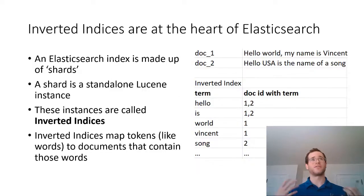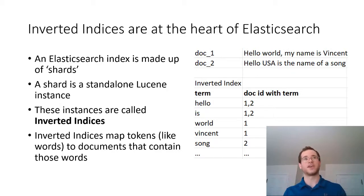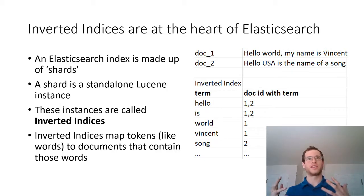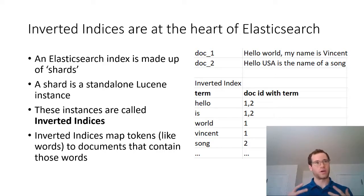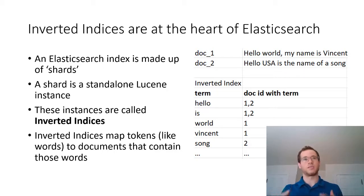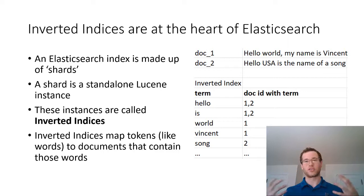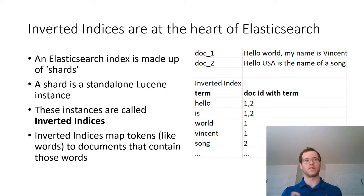The very first thing that lies at the heart of Elasticsearch is a bunch of inverted indices. Elasticsearch is built on Lucene, which is an open source project from Apache. What happens inside of Elasticsearch is that these indices are made up of a bunch of shards, and a shard is just a standalone Lucene index. These Lucene indexes make use of things called inverted indices.